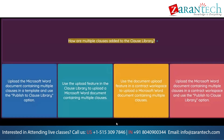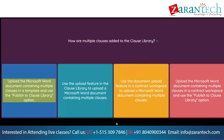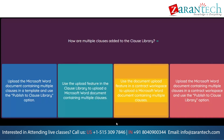Question: How are multiple clauses added to the clause library? Option 1: Upload the Microsoft Word document containing multiple clauses in a template and use the Publish to Clause Library option. Option 2: Use the Upload feature in the Clause Library to upload a Microsoft Word document containing multiple clauses. Option 3: Use the Document Upload feature in a contract workspace to upload a Microsoft Word document containing multiple clauses. Option 4: Upload the Microsoft Word document containing multiple clauses in a contract workspace and use the Publish to Clause Library option.